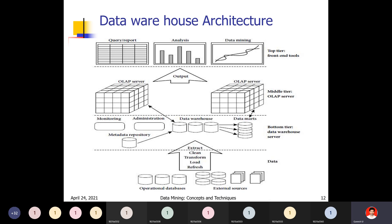The data warehouse architecture consists of three tiers. At the lower level are operational databases and external sources — various heterogeneous sources including temporal, spatial, sequence, text, and multimedia databases, as well as flat files. From these sources, data is extracted, cleaned, transformed, loaded, and refreshed into the data warehouse. This extraction, cleaning, and transformation is performed by back-end tools and utilities.